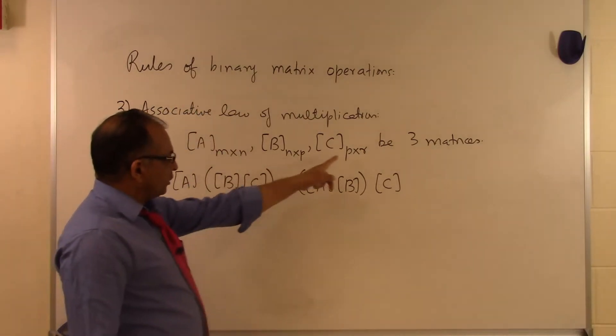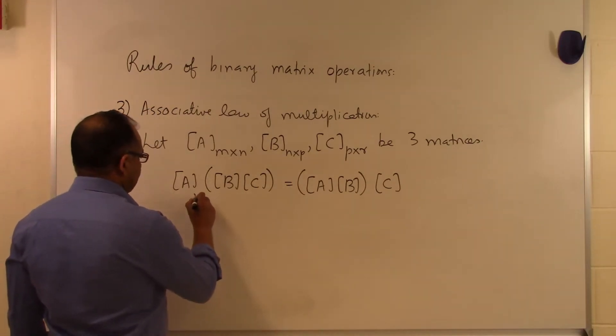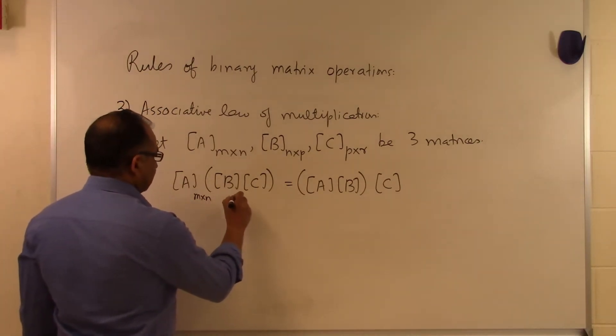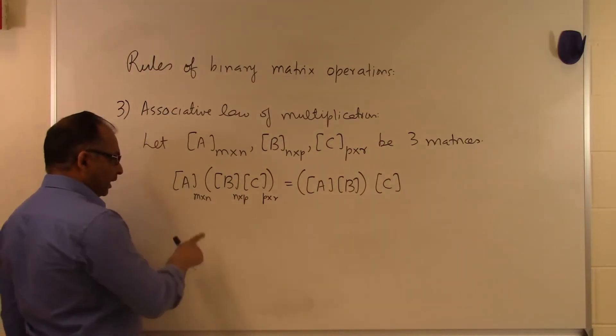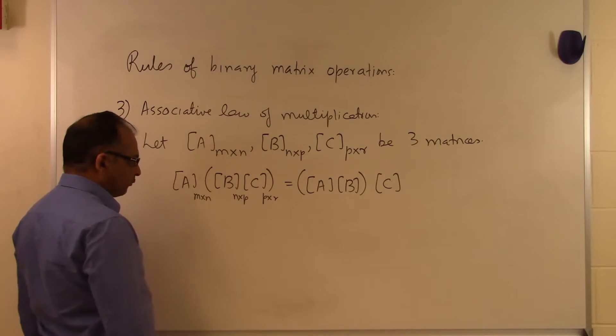And these orders are extremely important because you can very well see that if this is M by N and this is N by P and this is P by R, only then we will find out that these matrix multiplications are valid.